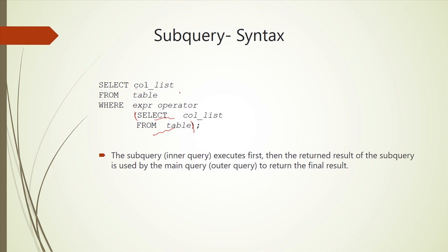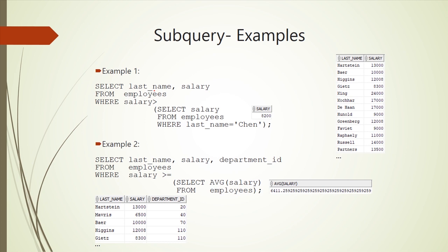First, the subquery — or inner query — executes and returns an output to the outer query, also called the main query. Then the main query executes and returns the final result. Let's have a look at these examples to understand the idea of the subquery.